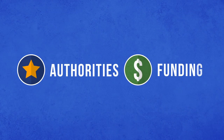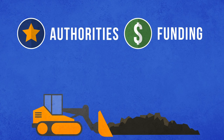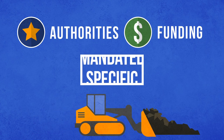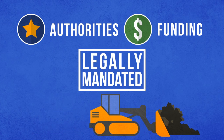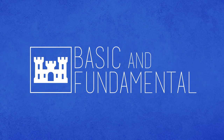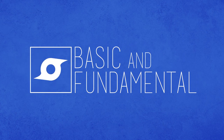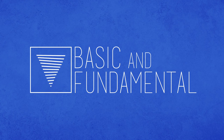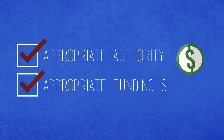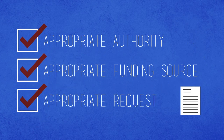The authorities and funding under which civil disaster operations occur are finite, specific, and legally mandated. There are three basic and fundamental items that USACE must have before it undertakes any disaster response activity: the appropriate authority for the activity, the appropriate funding source for the activity, and the appropriate request to undertake the activity.